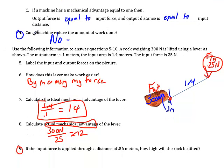C, machine has a mechanical advantage equal to one. Well that means I'm going to get out as much force as I put in. And my output distance will be equal to my input distance.